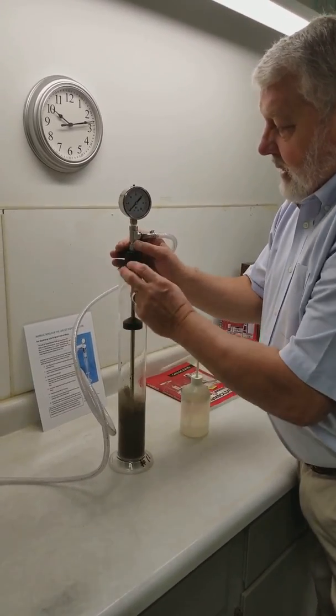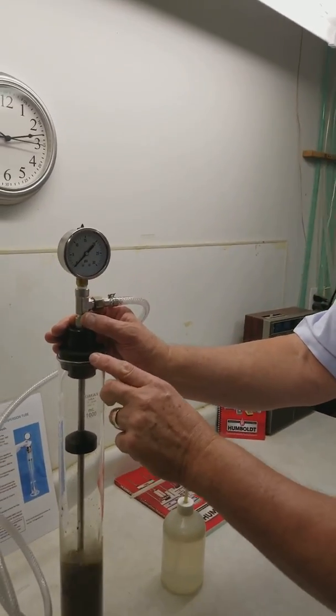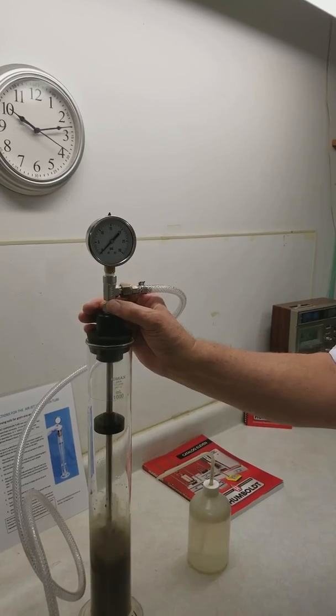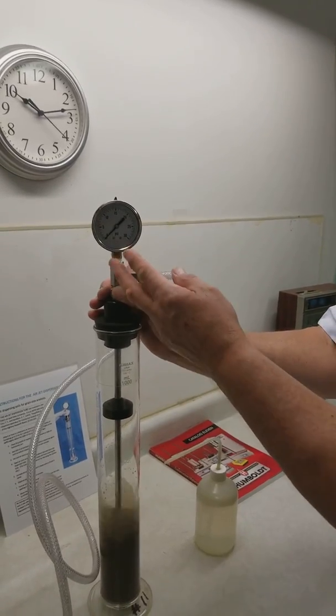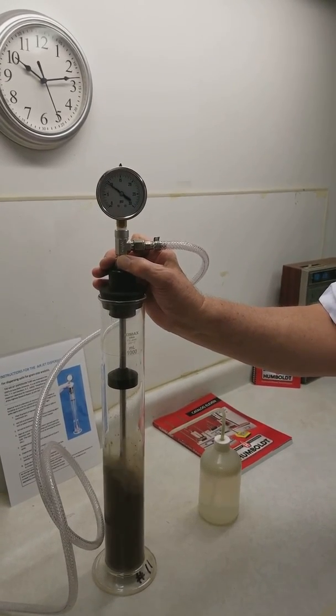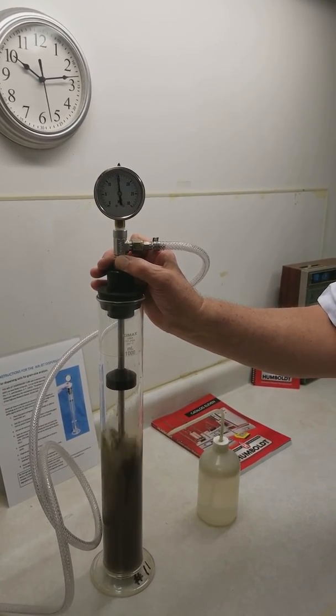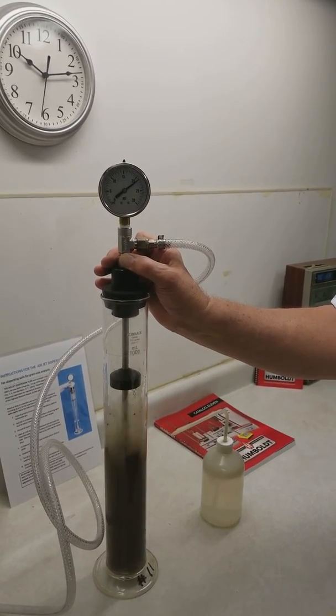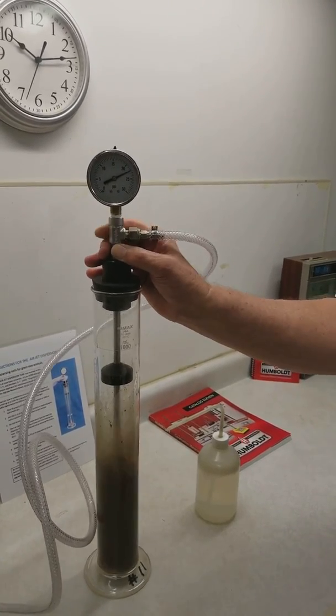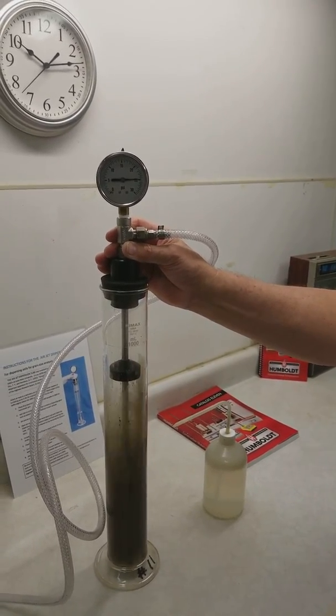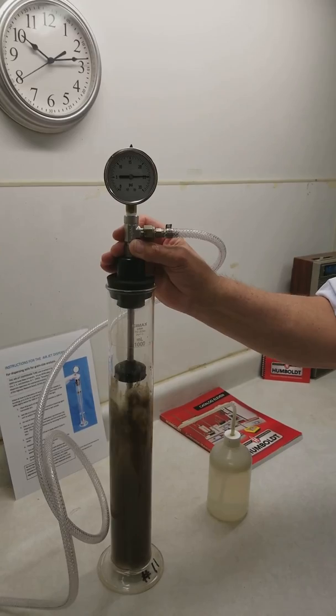The key thing here is to make sure that the rubber stopper is well seated in the top so that we don't lose any water and soil particles during the test. Now we can increase the pressure to 25 psi for a clay soil or 10 psi for a sandy soil. In this case the soil is predominantly clay so we'll use the 25 psi pressure and we will disperse the soil in this manner for five minutes.